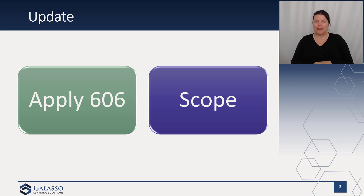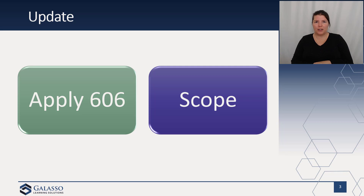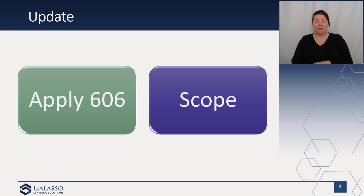At the acquisition date, we should account for the related revenue guidance in accordance with Topic 606, as if the acquirer had originated the contracts. Now, if the entity being acquired currently follows GAAP and has applied Topic 606 correctly using the performance obligation approach, generally speaking you would just measure the assets and liabilities how they were recognized and measured in the acquiree's financial statements.